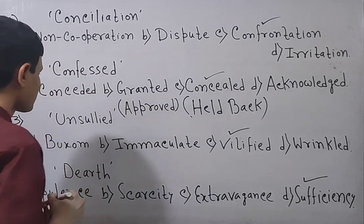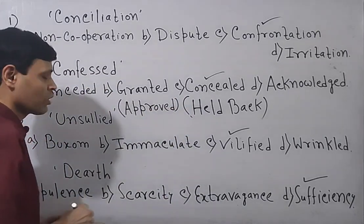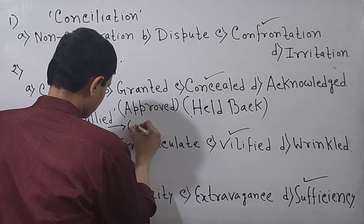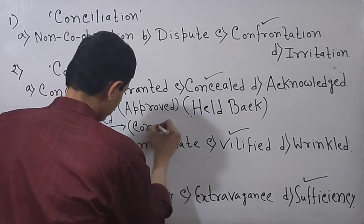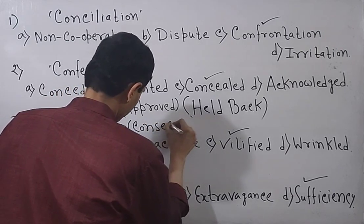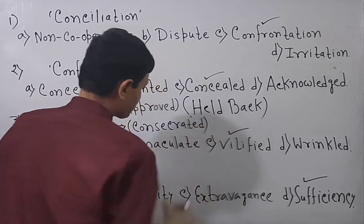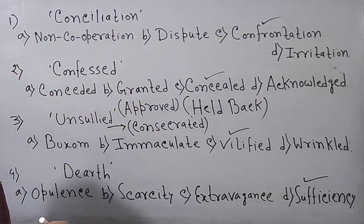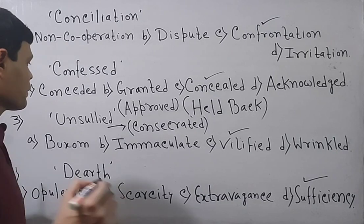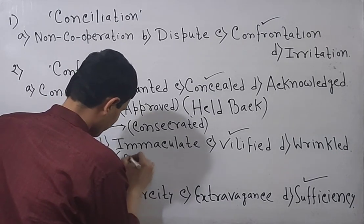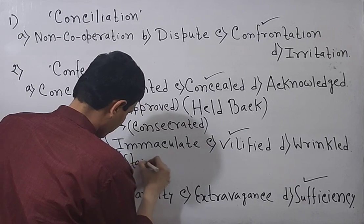Now unsullied means consecrated or made pure. Here unsullied means if I just write some synonym, it means consecrated or purified or made something sacred, made something holy. Buxom means strong. Immaculate means stainless or you can say spotless.